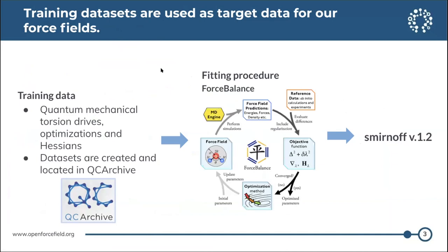So how does the training data set fall into the general workflow of Open Force Field? Our training data consists of quantum mechanical torsion drives, optimizations, and Hessians. The data sets are created and located in QC archive. We use this training data in our force field fitting procedure with ForceBalance, where the training data provides the reference ab initio calculations, allowing us to generate newly fit force fields such as Smirnoff version 1.2.